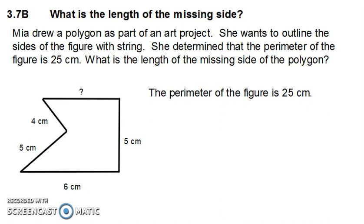We're going to start by writing the equation using the sides that were given plus the unknown. 4 plus 5 plus 6 plus 5 plus the unknown equals 25 centimeters.